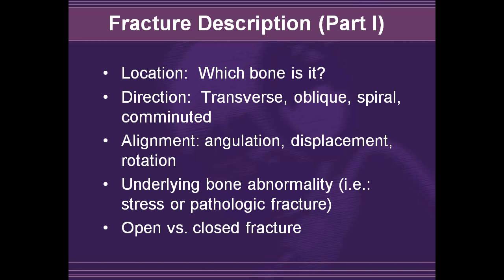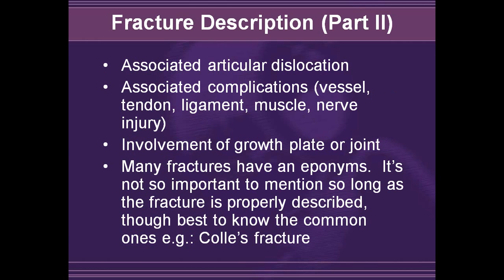The alignment of the two fragments of bone need to be discussed, including the angulation, whether there's displacement of the fracture, shortening, or rotation. A description of the underlying bone is also important — for example, a pathologic fracture compared to a stress fracture. A pathologic fracture occurs in an abnormal bone with normal stress, whereas a stress fracture is a normal bone with abnormal stress. Description of open versus closed fractures is also important. Other things to describe include associated articular dislocations in the nearby joint, such as a shoulder dislocation with a fracture of the humeral neck.